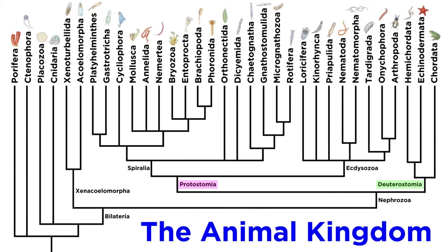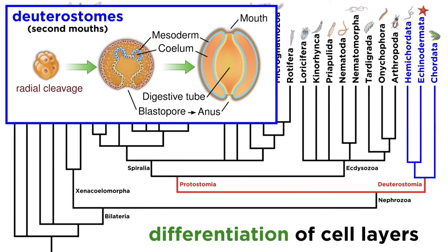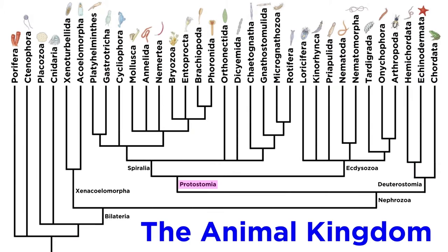Blastopores which develop into a mouth result in protostomes, whereas blastopores which develop into an anus result in deuterostomes. For the next sizable portion of this series, we are going to be focusing on all of these phyla within Protostomia, which fall into two very large clades — Spiralia and Ecdysozoa — and we will begin with Spiralia.